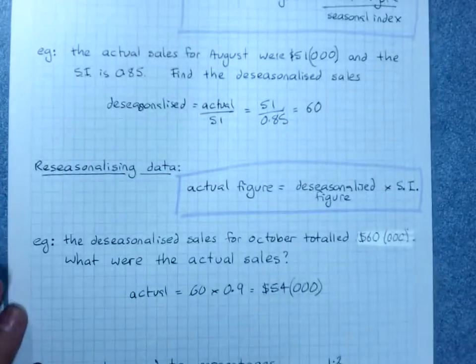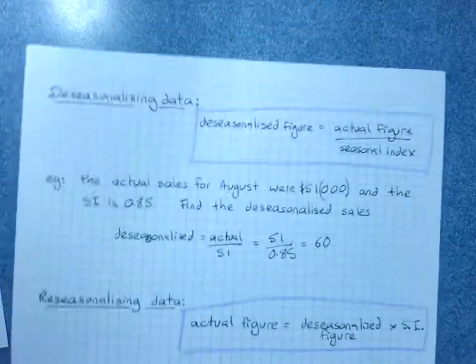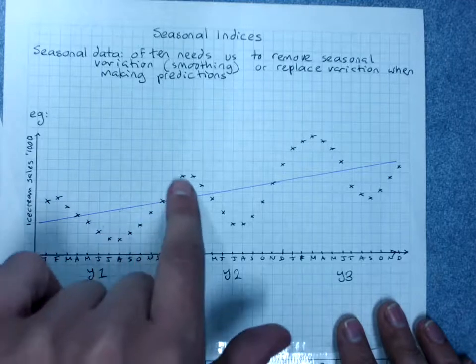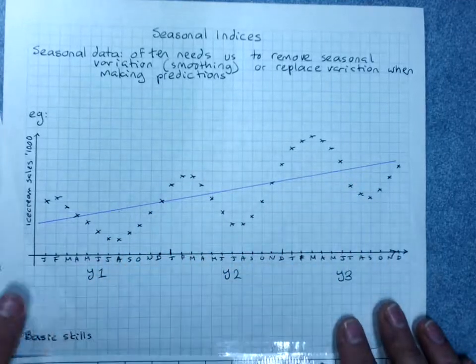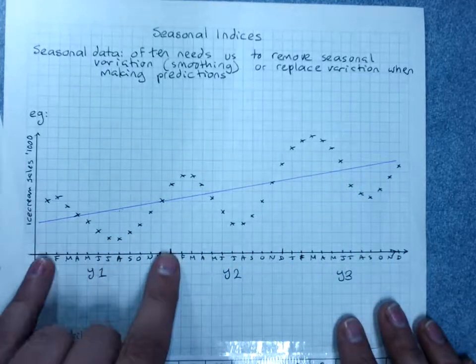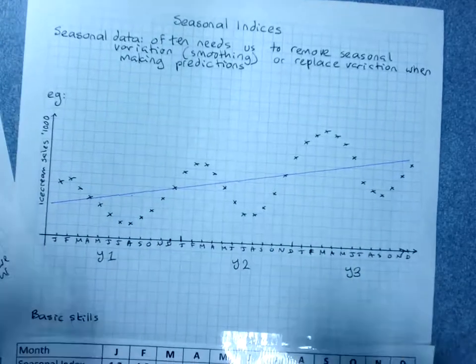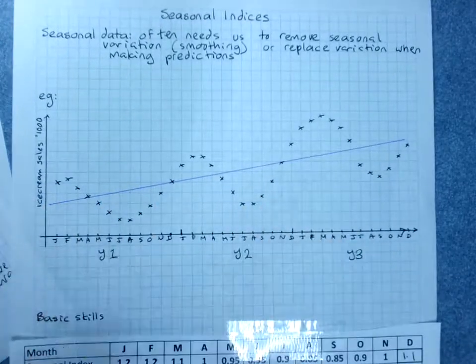Next lesson: taking a few years worth of data, preferably from a table, to calculate the overall seasonal indices for the months, so taking into account all the years. And then using those to smooth our data.